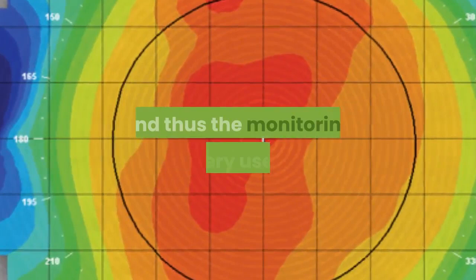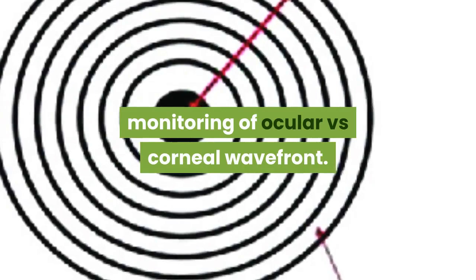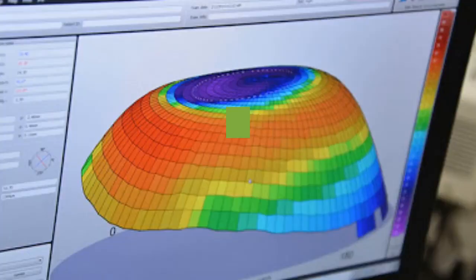Other uses include contact lens fitting, incision placement and intrastromal ring placement in keratoconus, and monitoring of ocular versus corneal wavefront. Corneal topography uses three main principles: Placido disc reflection, scanning slit, and Scheimpflug photography.